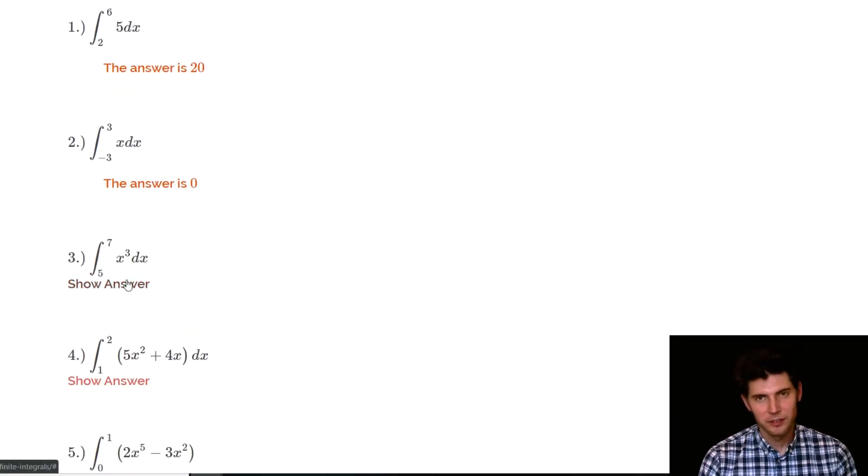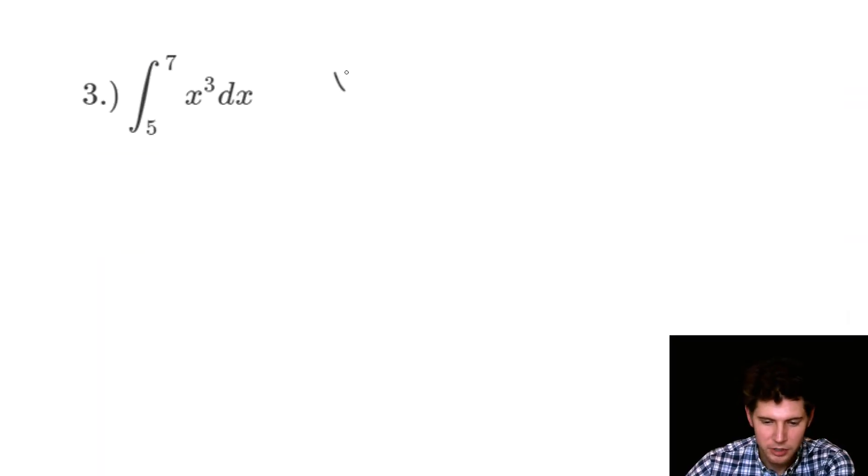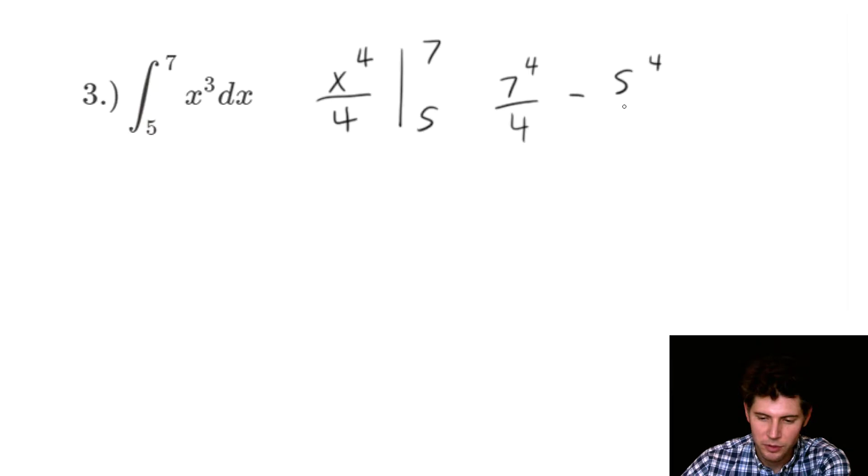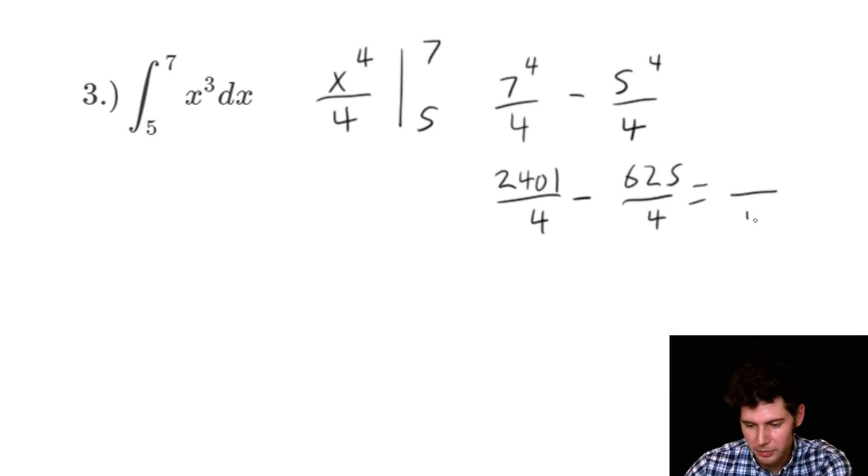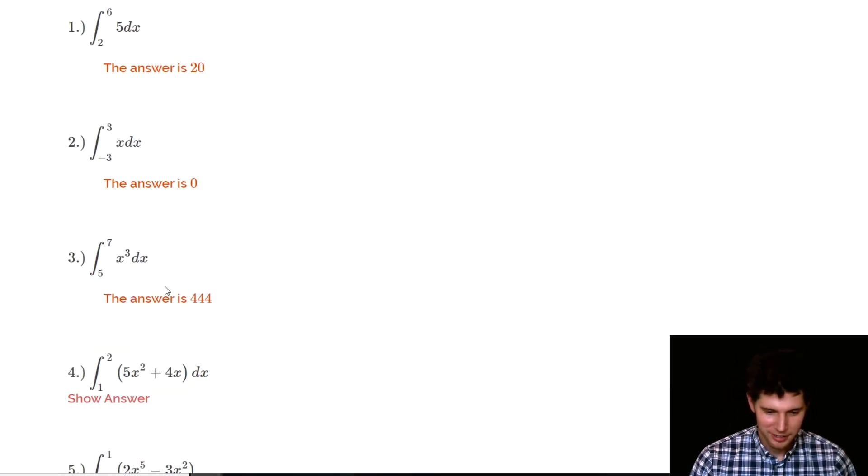Next one is the integral from five to seven of x cubed dx. So x cubed, we want to add one to that three. It's going to give us four, and then we divide by four. And we're evaluating from five to seven. So this is going to be seven to the fourth over four, minus five to the fourth over four. So seven to the fourth is 2401 over four, and five to the fourth is 625. So then when we subtract them, they're going to have a common denominator of four, and we're going to get 1776. And 1776 divided by four is 444.